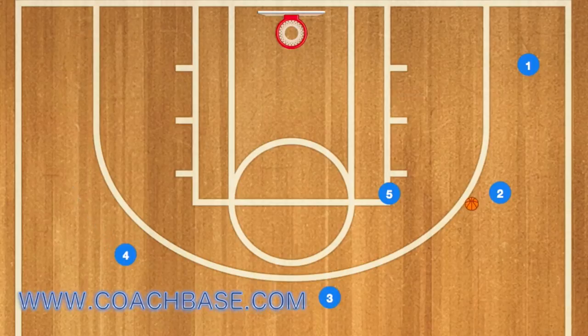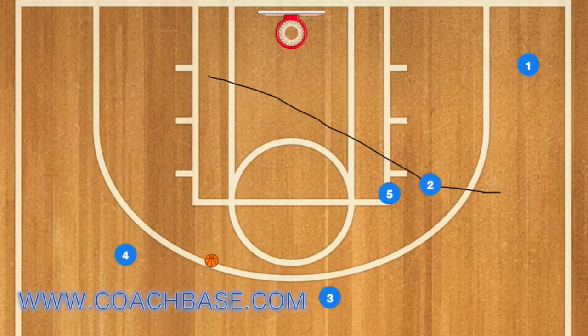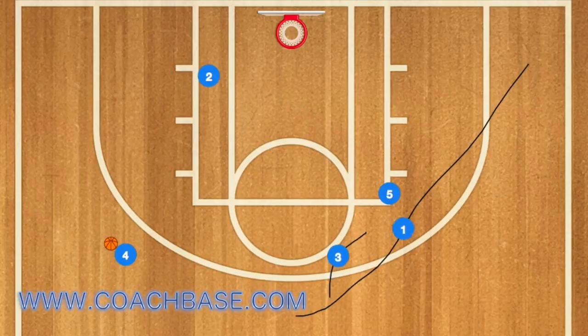At this time, player 2 will pass the ball to player 3, and then 2 will use 5 as a screen and post up in the left low post. Then 3 will pass to 4, and 4 will look for the post player 2.